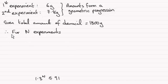So that means if she does N experiments, the total amount, which we'll call S_N, the sum of all the amounts for N experiments must be less than or equal to the 1,800 grams that she's got available.